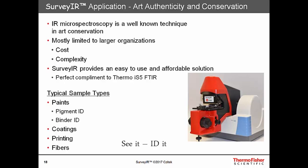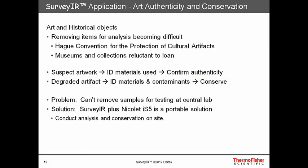In works of art, it's very important to examine and analyze different types of samples: paints — which include pigments, binders, and fillers — other coatings, protective coatings such as varnishes, printing, fibers, and polymers. Modern works of art and sculptures often employ polymers that will degrade over time thermally and through photo degradation. It can be very difficult to transport or move works of art. The Surveyor IS-5 combination allows the analysis of these works by transporting the analytical platform to the artwork rather than the artwork to the analytical platform.